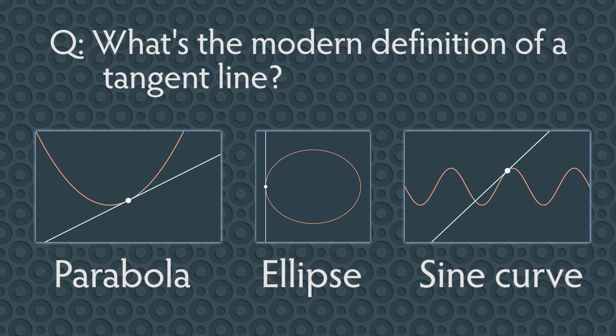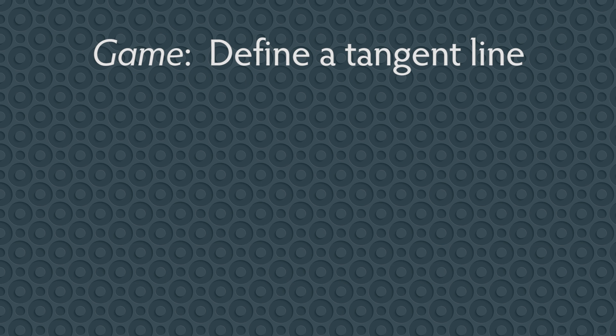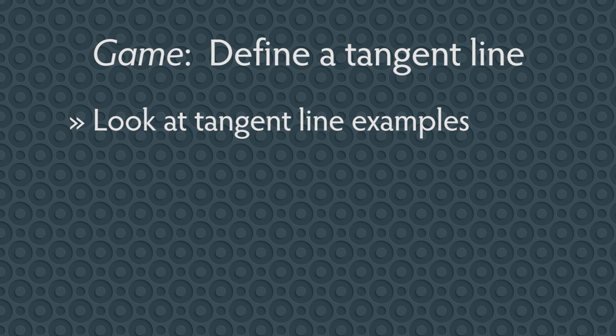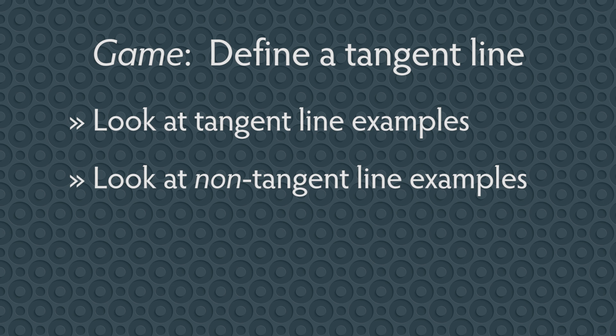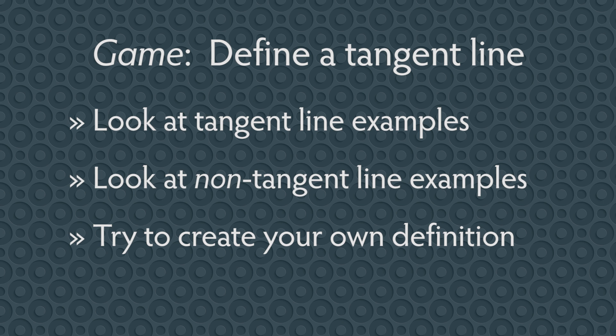So, what's the modern definition of a tangent line? Well, math definitions are tricky things — they're kind of like wishes you make to a genie. If you're not very careful with your choice of words, you can end up in trouble. So let's play a game. I'm going to show you a bunch of images of tangent lines and non-tangent lines. While I do this, try to come up with your own definition of a tangent line.